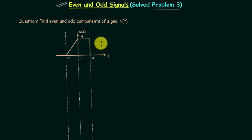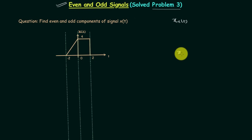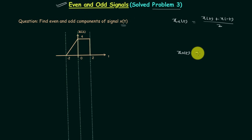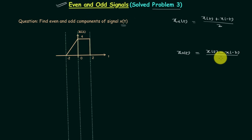In this question we cannot use the properties to obtain the even and odd components, so we will use the formulas. XE(t) is the even component of original signal X(t), and it is given as X(t) plus X(-t) over 2, where X(-t) is the signal obtained when you perform the time reversal.